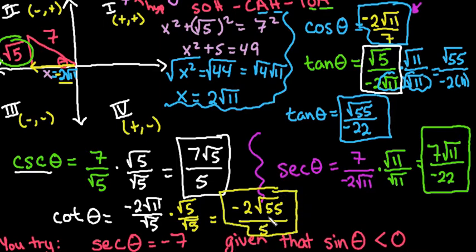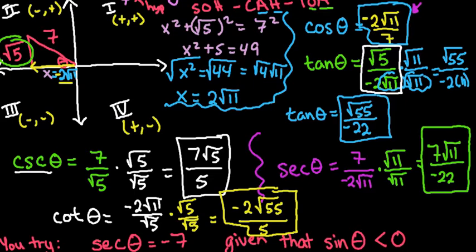To summarize, the remaining trig functions are: cosine is negative 2 square root of 11 over 7; tangent is square root of 55 over negative 22; cosecant is 7 square root of 5 over 5; secant is 7 square root of 11 over negative 22; and cotangent is negative 2 square root of 55 over 5. Make sure you simplify any radicals — if there are perfect squares inside, they must be simplified.